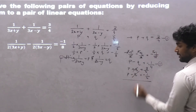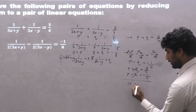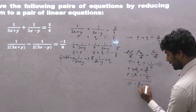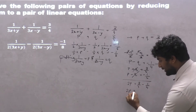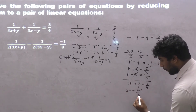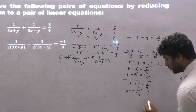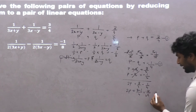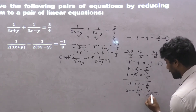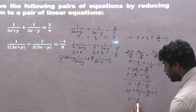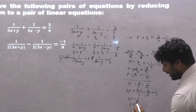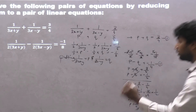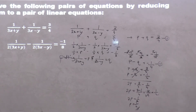After adding, q and −q cancel. So 2p is equal to 3 upon 4 plus (minus 1 upon 4). The plus and minus gives minus, so 2p equals 3 minus 1 upon 4, which is 2 upon 4, which simplifies to 1 upon 2. So 2p equals 1 upon 2, and therefore p equals 1 upon 4.